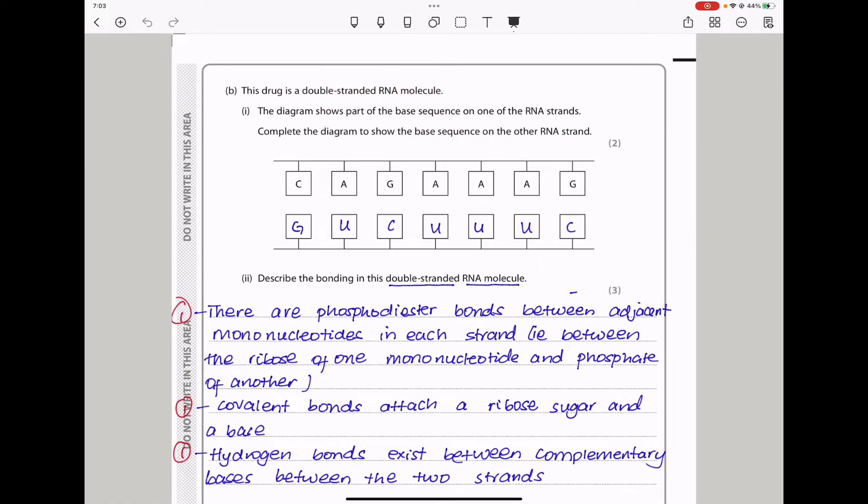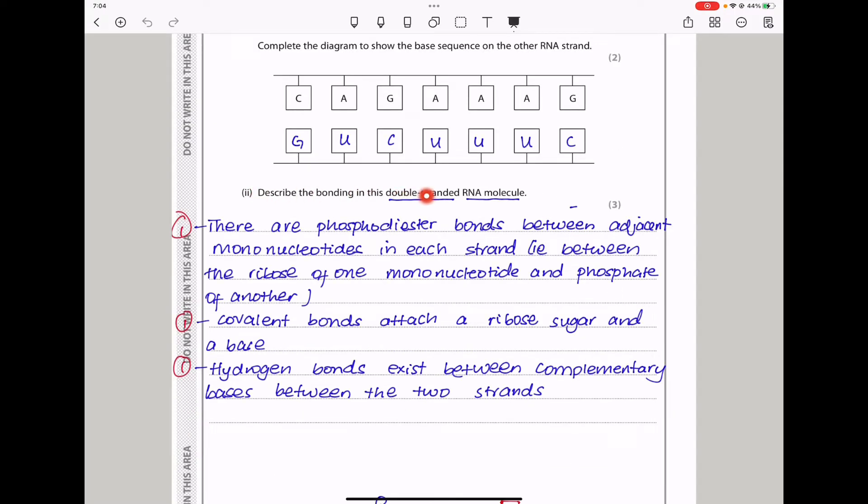Part B, this drug is a double-stranded RNA molecule. The diagram shows part of the base sequence on one of the RNA strands. Complete the diagram to show the base sequence on the other RNA strand. The key thing here is knowing that in RNA, we do not have thymine, but we have uracil. Also know that cytosine pairs with guanine, and adenine will pair with uracil on the other side. So that is going to be G. Here we have uracil, cytosine, uracil, uracil, uracil, and cytosine here.